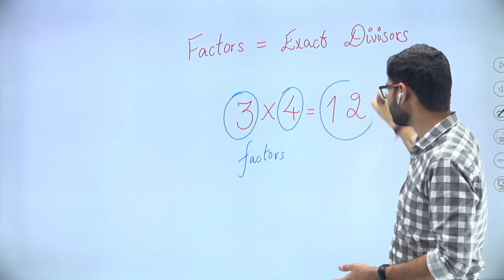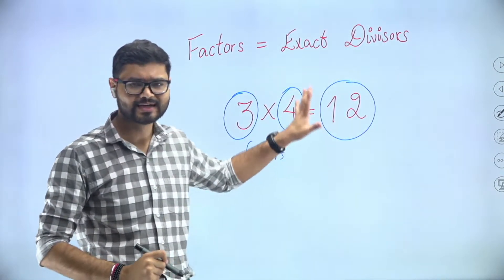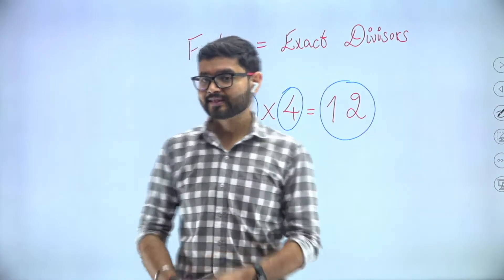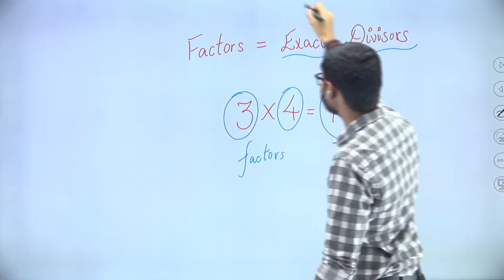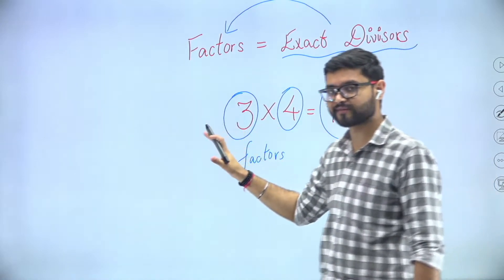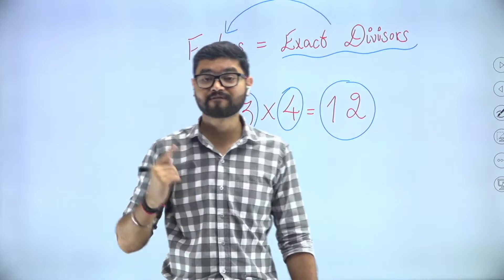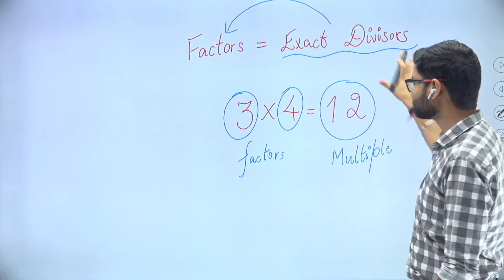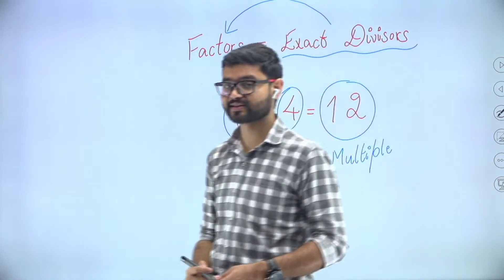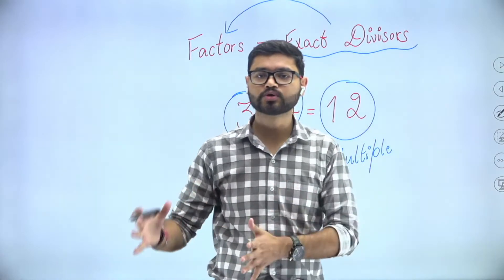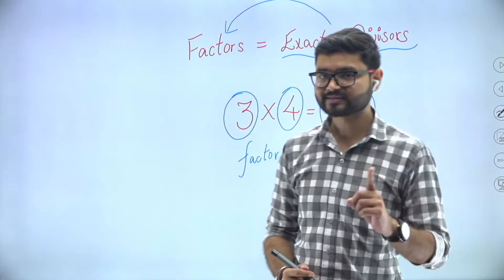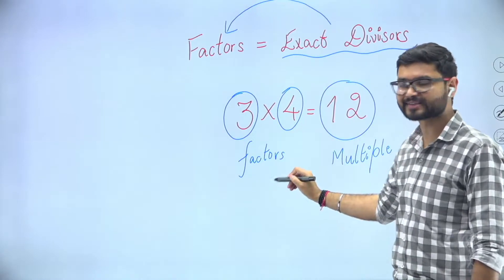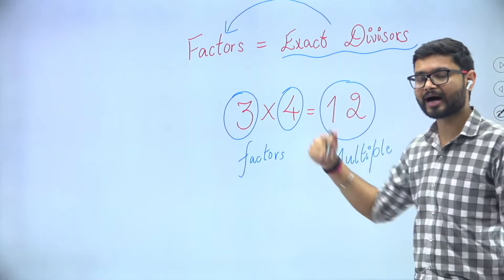So what do we call this number 12? We can say product, but let's give it a fancy name. Just as we gave exact divisors the fancy name of factors, in this session we will give the product a new name: multiple. Number 12 is a multiple of three and four. When we multiply two numbers to get another number, the numbers being multiplied are the factors; the result is the product — or, with our new name, the multiple.